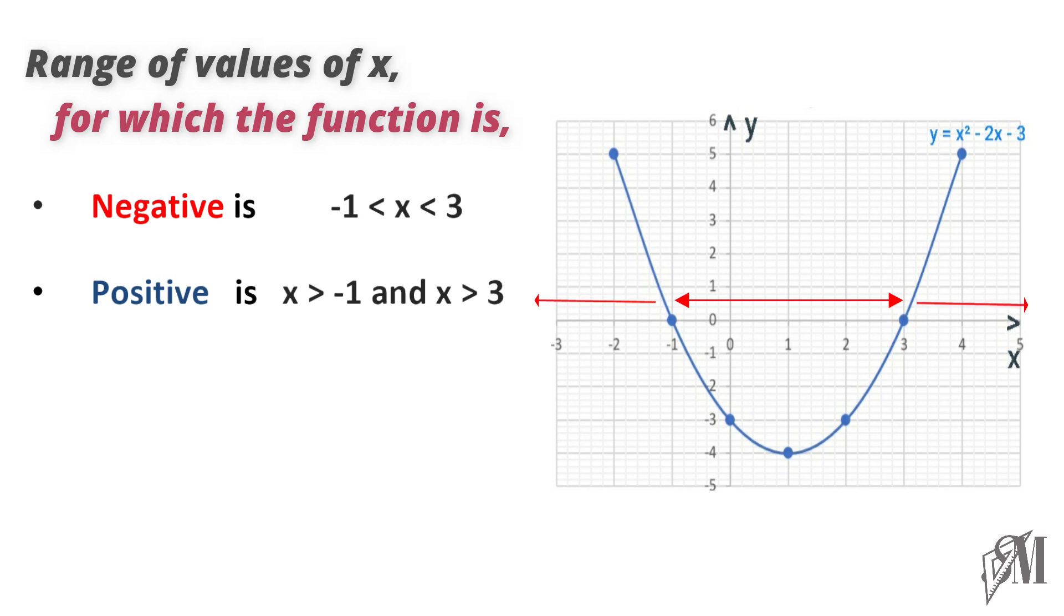The x coordinates at which the graph cuts the x-axis are called the roots. At this point y coordinates are 0. Here in this graph the roots are minus 1 and 3.